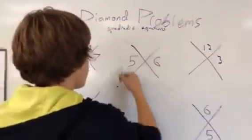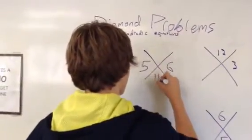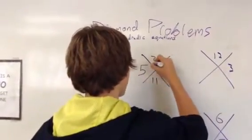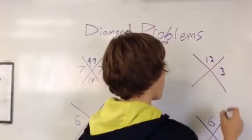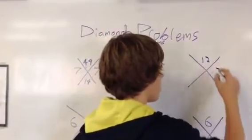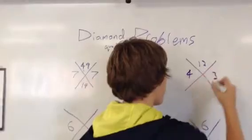Now for other examples, we could have 5 plus 6 equals 11, 5 times 6 equals 30, or 12 and 3 in a different order. This would be 4, and 4 plus 3 is 7.